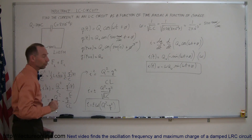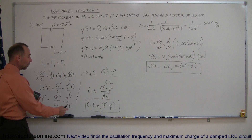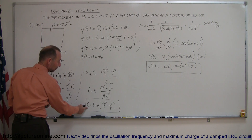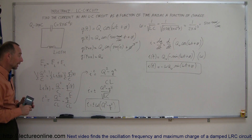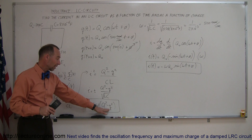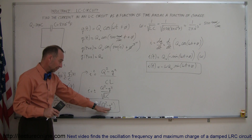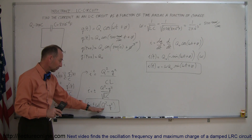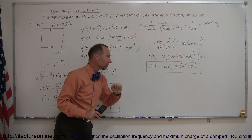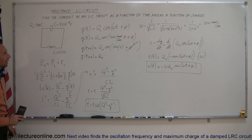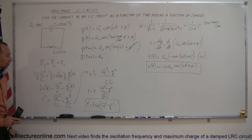Even though Q and I are functions of time, if we don't know the time, we can always find the current in the circuit as a function of the charge currently on the capacitor. If there's zero charge on the capacitor, then you have maximum current. If the charge on the capacitor equals the total charge we started with, then the current is zero. And that's how you find current, either as a function of time or as a function of charge on the capacitor.